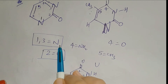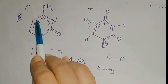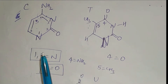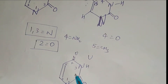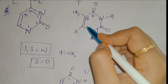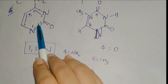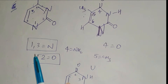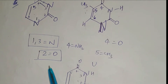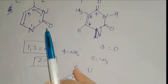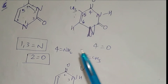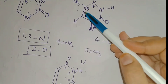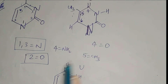So to remember pyrimidine structures: first and third position nitrogen, the numbering of atoms, then where double bonds are present. In case of cytosine: double bonds between 5 and 6, and 4 and 3. In case of thymine and uracil: double bond between the 5th and 6th position. Remember the pattern of numbering, positions of double bonds, nitrogen at 1 and 3, oxygen at 2nd position in all three, and the speciality at the 4th position: NH2 for cytosine, O for thymine and uracil, with the only difference between thymine and uracil being a methyl group at the 5th position.